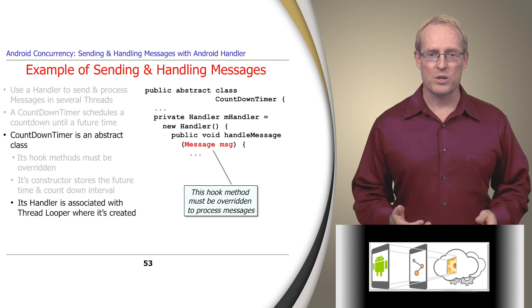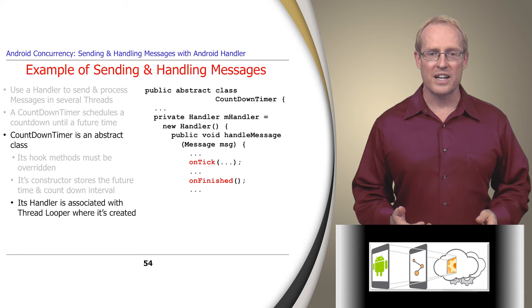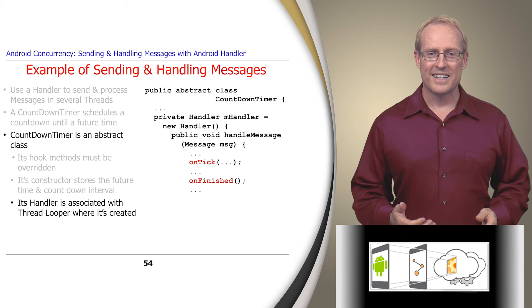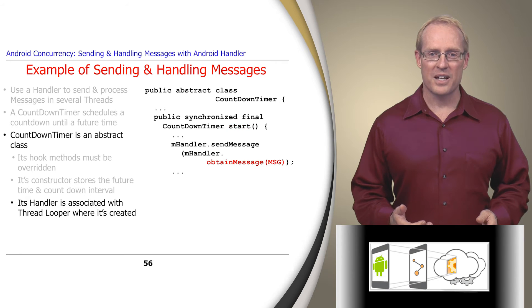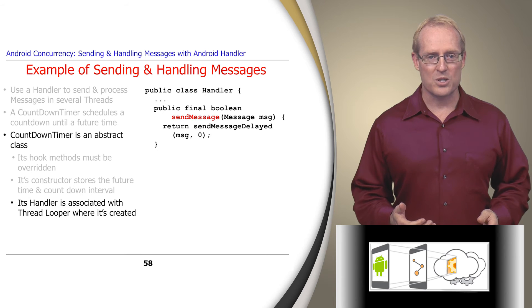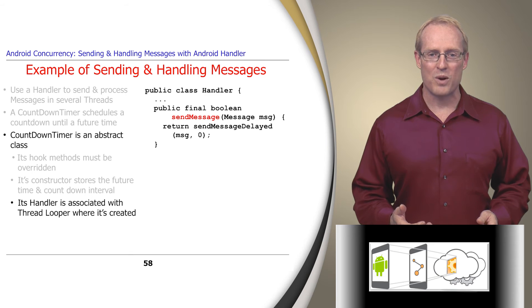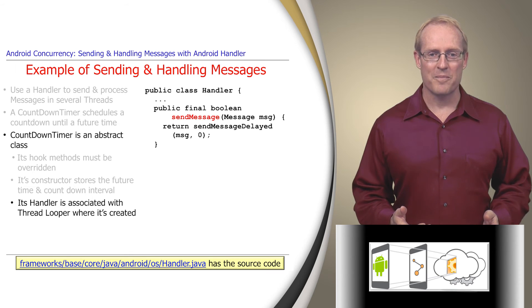When a countdown timer receives a message via handleMessage, it invokes a callback to the overridden onTick or onFinish hook methods in the thread where it was created. Its start method obtains and sends a message to its internal handler via sendMessage. SendMessage inserts the message into the message queue of the handler's looper, where it's processed as soon as the queue is ready, as shown at this path name.